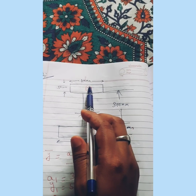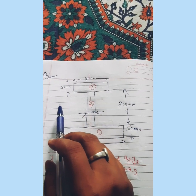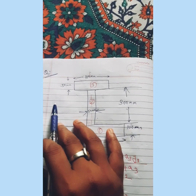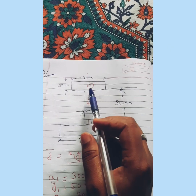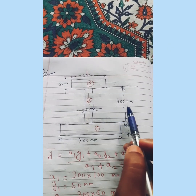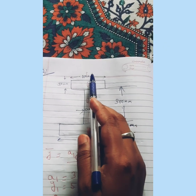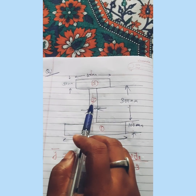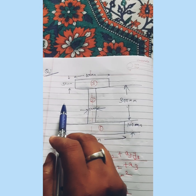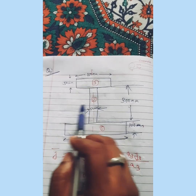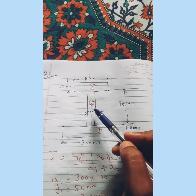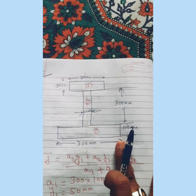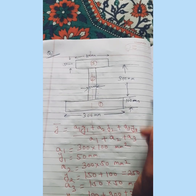First we will check whether it is symmetric about the x-axis or y-axis. It is clear from the diagram that it is symmetric about the y-axis and not symmetric about the x-axis. So its center of gravity will lie on the y-axis only. Therefore we already know the x-coordinate and only need to find the y-coordinate.